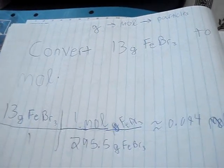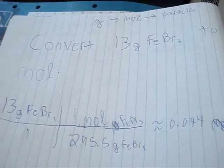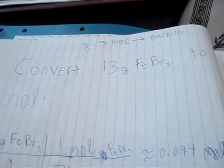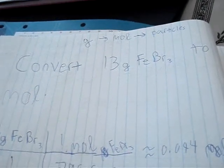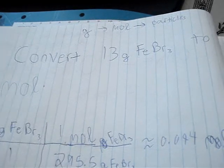Sorry about that, we had Michael Jackson up. In our next problem, we're converting 13 grams of FeBr3 to moles. Okay, once again, look up at your road map. Going from grams to moles to particles. In this one, we're going from grams to moles. So we're going to get our mass off of the chart.